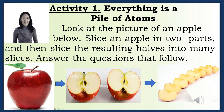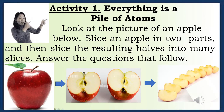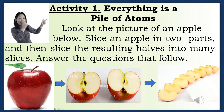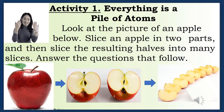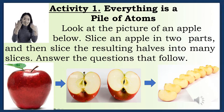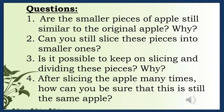Activity 1: Everything is a pile of atoms. Look at the picture of an apple below. Slice an apple in two parts, and then slice the resulting halves into many slices, just like the picture below. Answer the questions that follow. Question 1: Are the smaller pieces of apples still similar to the original apple? Why?